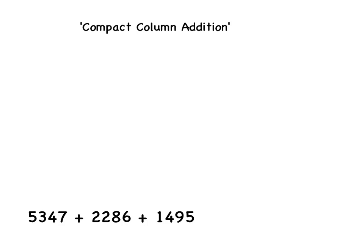This video will show you how to use Compact Column Addition to add three four-digit numbers. On the screen you can see three four-digit numbers: 5,347, 2,286, and 1,495.